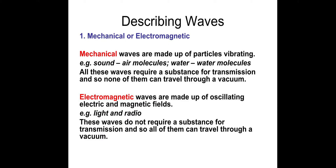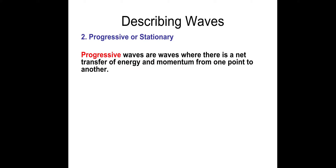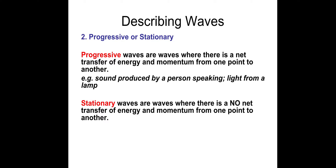Electromagnetic waves are made up of oscillating electric and magnetic fields, so for example, light and radio. These waves do not require a substance for transmission, and so all of them can travel through a vacuum. There are two types of waves we need to know about: progressive and stationary. Progressive waves are waves where there's a net transfer of energy and momentum from one point to another — for example, sound produced by a person speaking or light from a lamp. Stationary waves are waves where there is no net transfer of energy and momentum, for example, the wave on a guitar string.